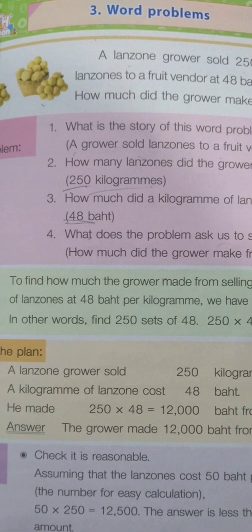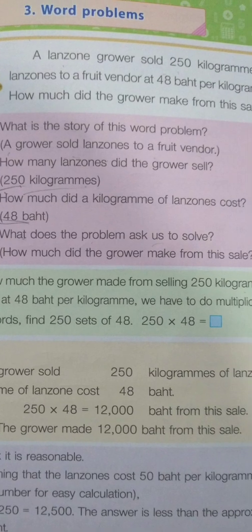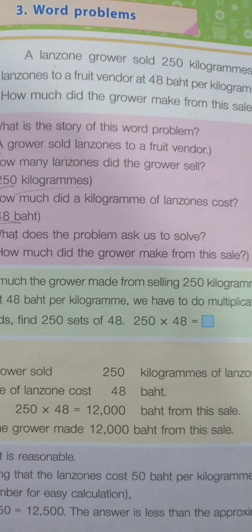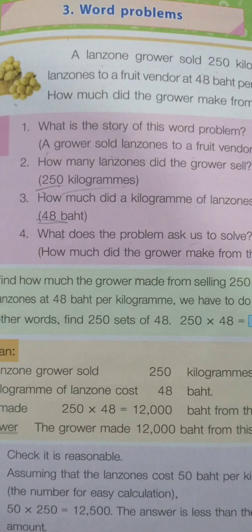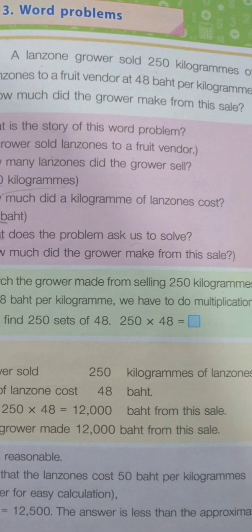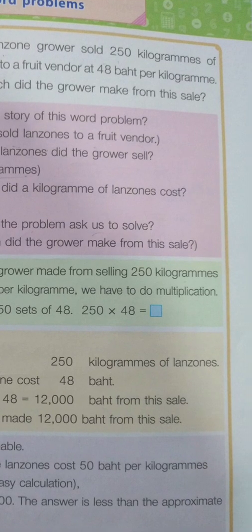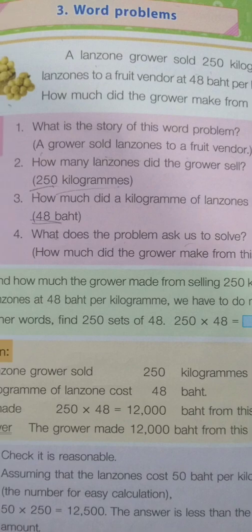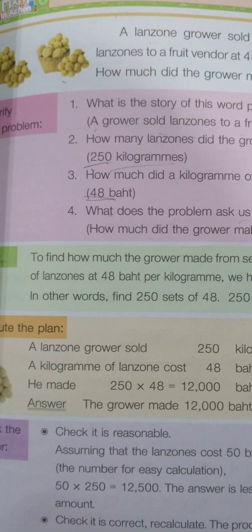How many lanzones did the grower sell? The answer is 250 kilograms. How much did a kilogram of lanzones cost? 48 baht. And what does the problem ask us to solve? The problem asks us to solve how much the grower made from this sale.